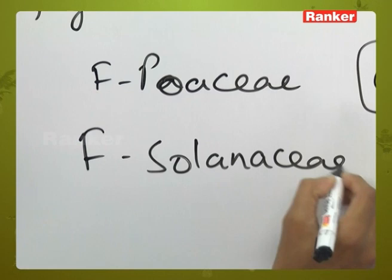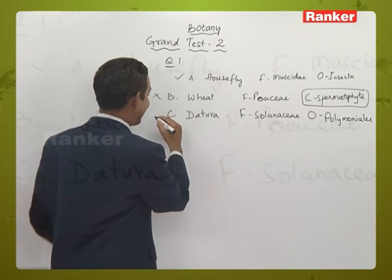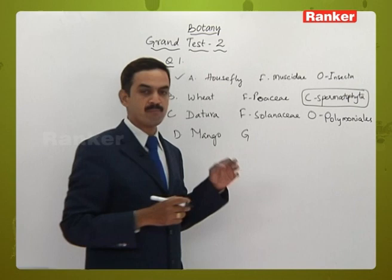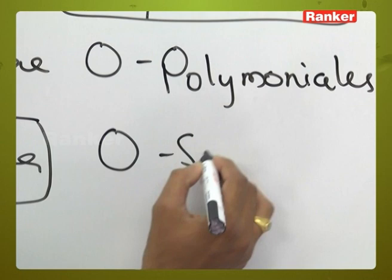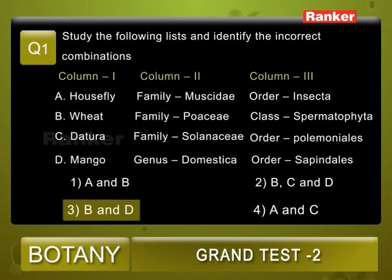Datura belongs to the order Polemoniales — all three columns given for C are correct. Then D: mango belongs to dicotyledons and its genus is Mangifera, but here it is given as domestica, which is incorrect. The order Sapindales is correct, but one of the three columns is incorrect. So B and D are the incorrect combinations. Question number one: the correct answer is three.